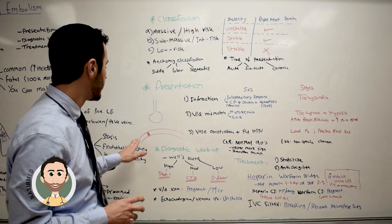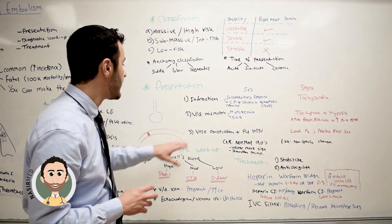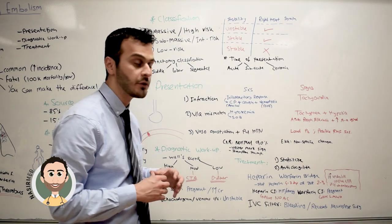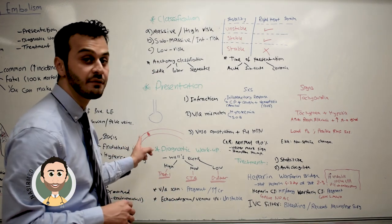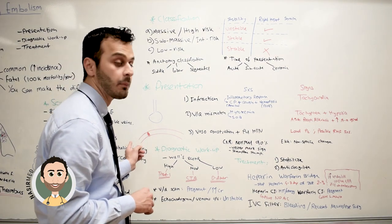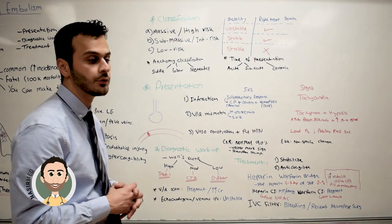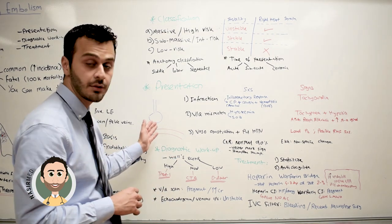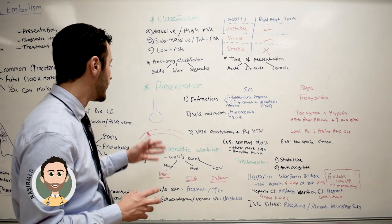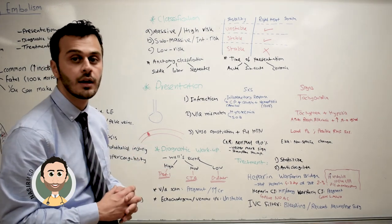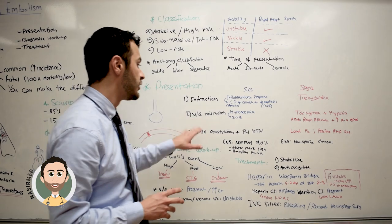Now, once the blood clot obstructs the pulmonary artery, there will be a VQ mismatch — a ventilation to perfusion mismatch. The blood clot will prevent perfusion of arterial blood through that segment, resulting in too much ventilation but very low perfusion, causing this VQ mismatch.